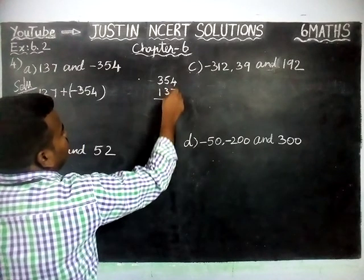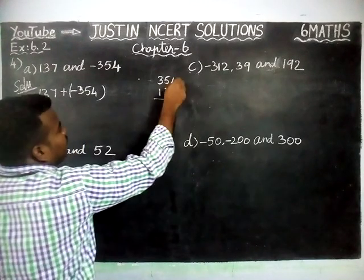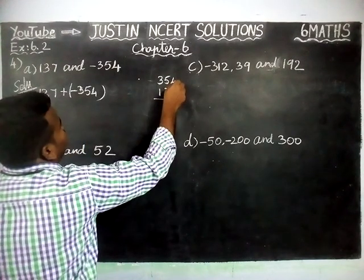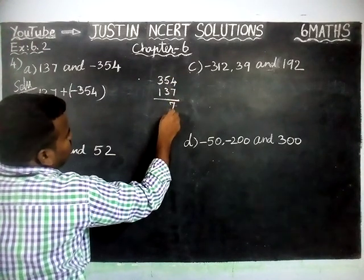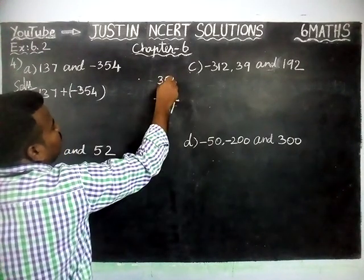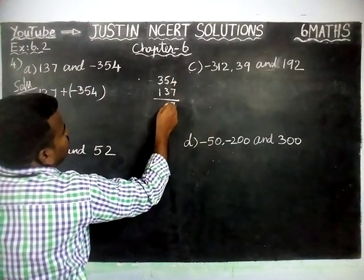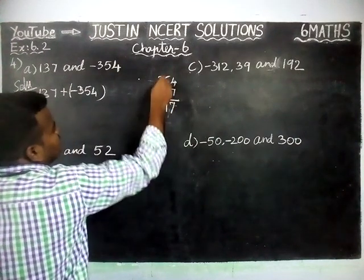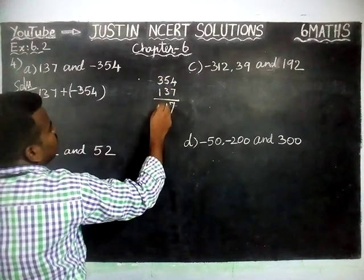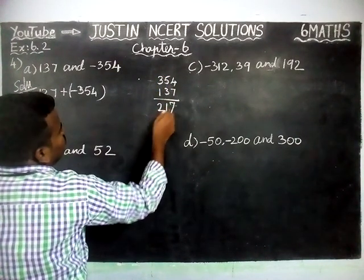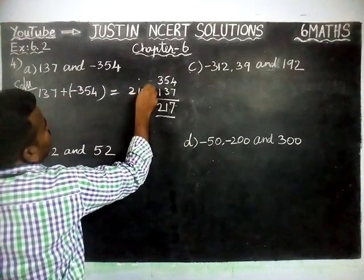Now 4 minus 7 is not possible. So from here we are borrowing. Now this is 14. 14 minus 7 is equal to 7. Here we have only 4, so 4 minus 3 is equal to 1. Next here 3, 3 minus 1 is equal to 2. So the difference is 217.